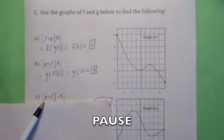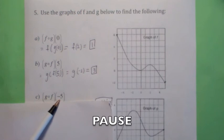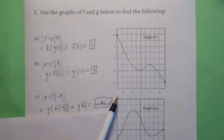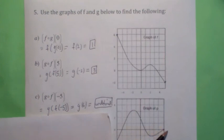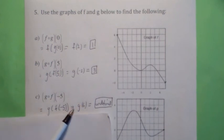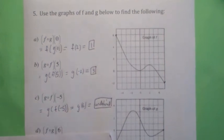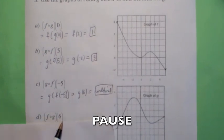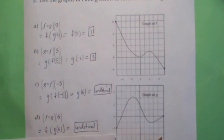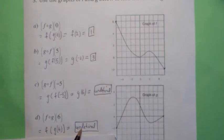Try to compute g circle f of negative 5 using the graph. You'd first compute f of negative 5, which is 6. But what's g of 6? There is no g of 6 — it's undefined. x is in the domain of f, and f of negative 5 is 6, but f of x is not in the domain of g. So this is ruled out because it's not in the domain of the outside function. Now try f circle g of 6: that means f of g of 6. What's g of 6? There's no 6, so it's not in the domain of the inside function — that's the other way a value can be ruled out.